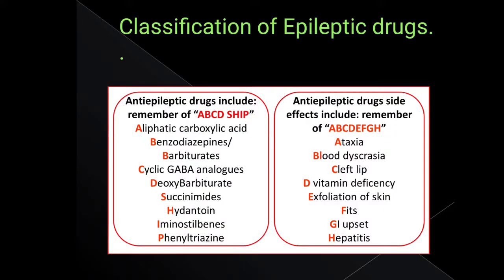Classification of antiepileptic drugs. Antiepileptic drugs are organized into groups A, B, C, and D, and antiepileptic drug side effects are also included.